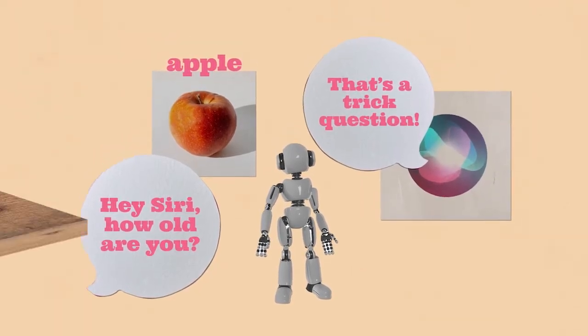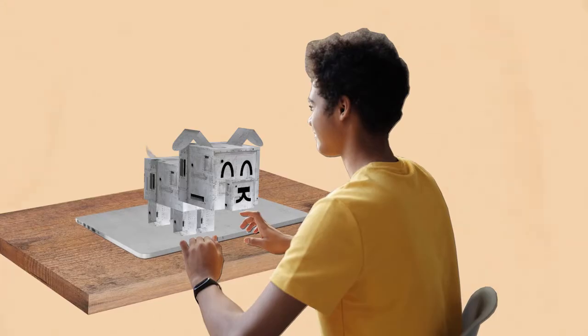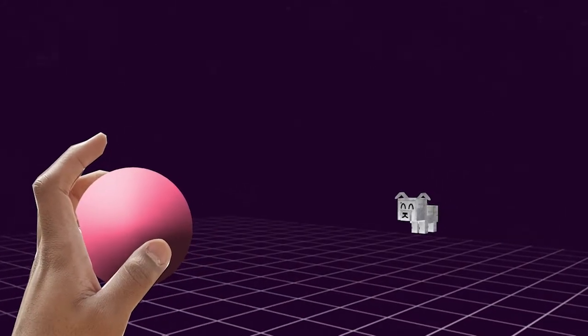But how do you teach a computer to learn and think? Well, it's kind of like when you train a pet to do tricks. Think of AI as a robot dog that you're training to fetch a toy.